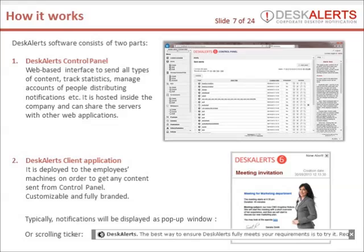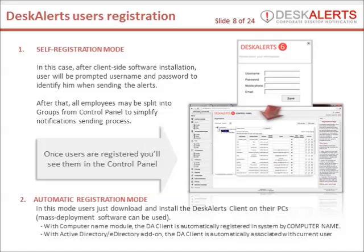The Desk Alerts agent application should be installed on the machine in order to receive content sent from the control panel. Once installed, the agent application is required to be registered. You can also use silent mode to install the software — in this mode, users simply download and install the Desk Alerts agent on their PCs. Mass deployment software can also be used.